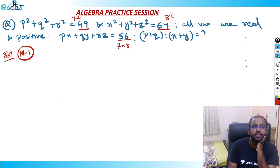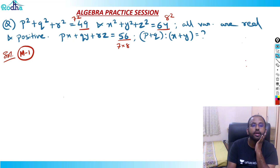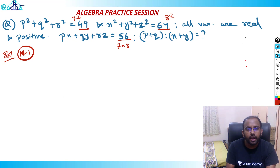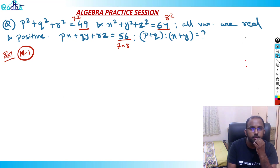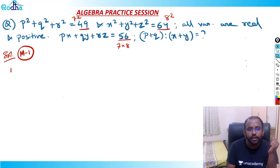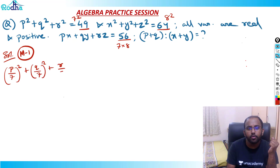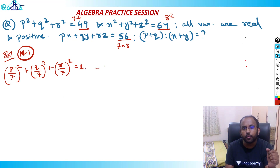We think that something 7 into something 8 gives 56 here. If I divide the first equation by 49, I get P²/49 + Q²/49 + R²/49 = 1, which I can write as (P/7)² + (Q/7)² + (R/7)² = 1. This is equation number 1.